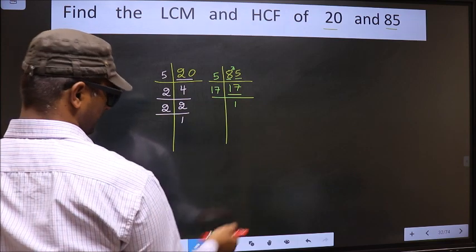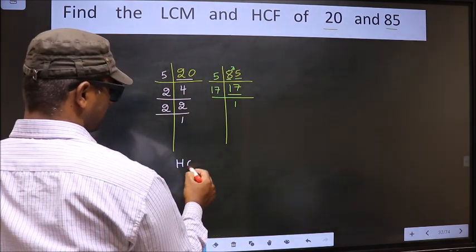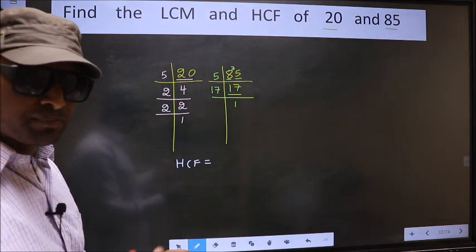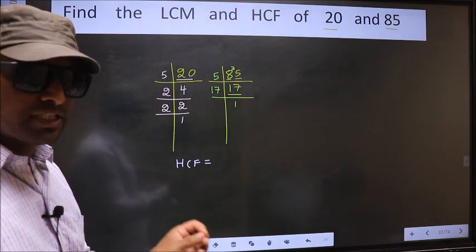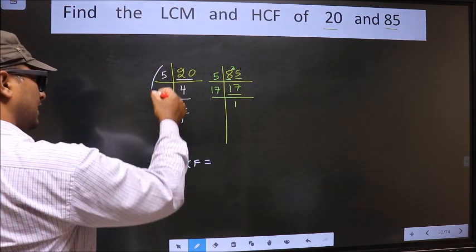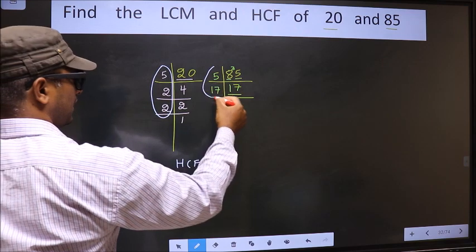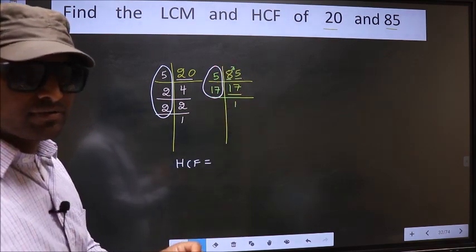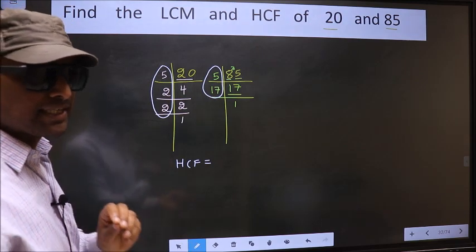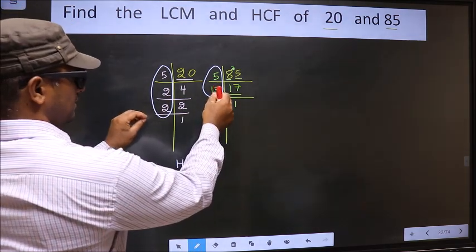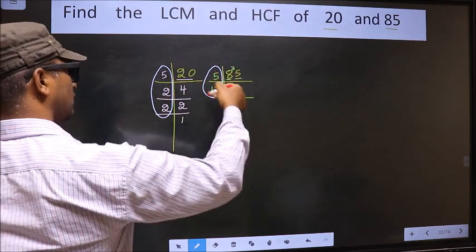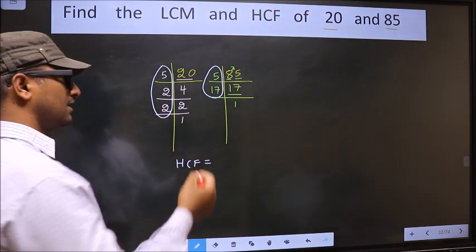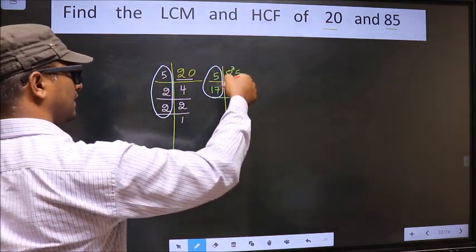So our HCF is, HCF is the product of numbers which should be present over here and also here. I repeat, HCF is the product of numbers which should be present in these two places, that is here and also here. So now let us find the numbers which are present here and here.